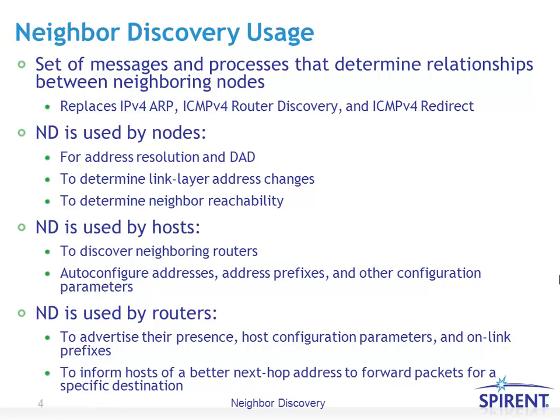Neighbor Discovery is used by routers specifically to advertise their presence, to announce host configuration parameters and on-link prefixes, and to inform hosts of a better next-hop address to forward packets for a specific destination.